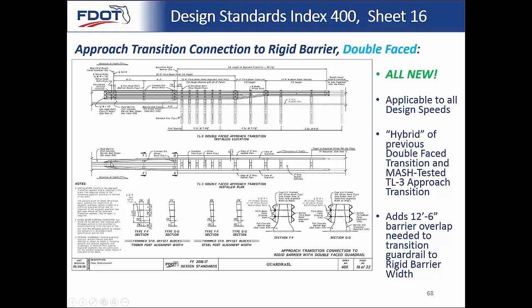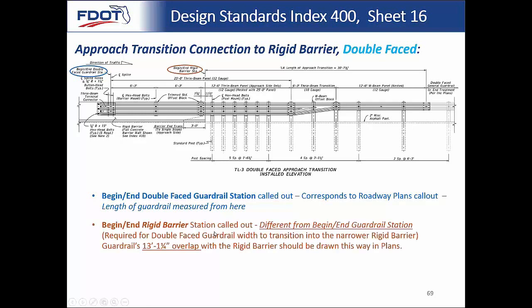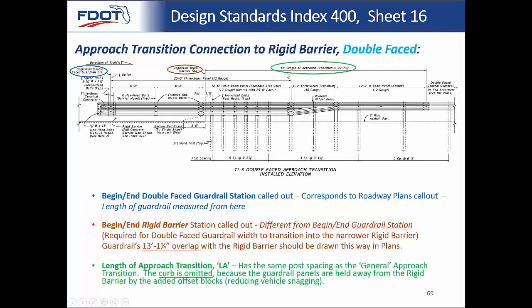The theory behind the offset blocks is to gradually transition the width down to the concrete barrier width, where you mount with bolts. Similar to single-faced, begin/end double-faced guardrail is called out in the plans. The 12-foot-6-inch addition shifts the total overlap to 13 foot 1¼ inches — when calling out the beginning of guardrail, you must overlap with the rigid barrier by 13 foot 1¼ inches to include all panels. Portion LA in elevation view is essentially the same as the TL3 single-faced guardrail, with all post spacing identical. One difference is the curb is omitted — because posts would conflict with it, and the offset blocks hold the face of guardrail further from the toe of the cutback curb, creating more clearance.